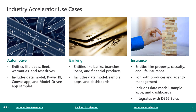Taking a look at the automotive accelerator — it includes entities like deals, fleets, warranties, and test drives, along with the data model and many more entities. The banking accelerator includes entities like banks, branches, loans, and financial products, with the data model plus sample apps and dashboards. The insurance accelerator is designed and integrates directly with Dynamics 365 Sales — it includes a variety of entities and can be used for both producer and agency management, with the data model, sample apps, and dashboards included.